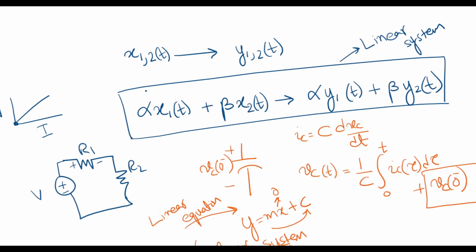Combining both principles: if x1(t) leads to y1(t) and x2(t) leads to y2(t), then multiplying x1 by constant alpha leads to a·y1(t), and multiplying x2(t) by constant beta leads to b·y2(t). So combining inputs a·x1(t) + b·x2(t) should lead to outputs a·y1(t) + b·y2(t). I illustrated this further with a capacitor example in my previous lecture, which you can watch for more detail.